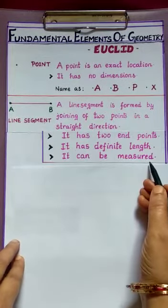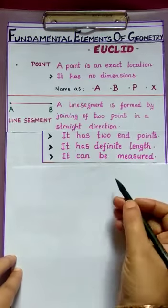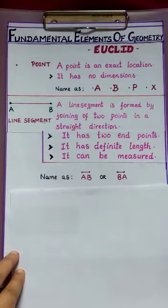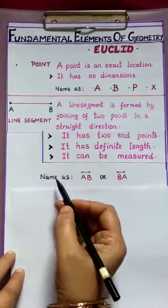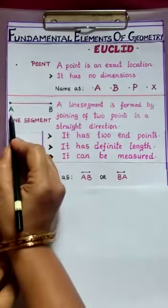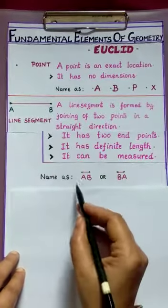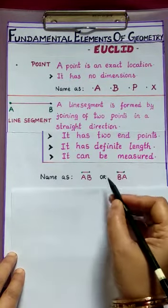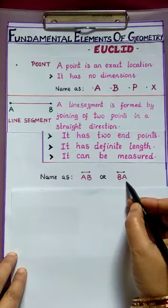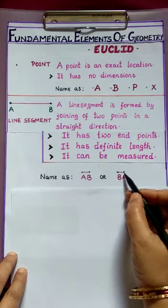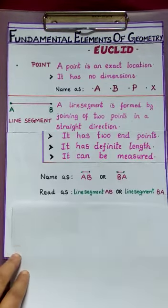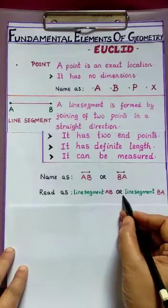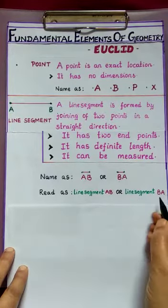So how can we measure the line segment? Yes, by using scale. Now, how can we name the line segment here? Here, if you observe the line segment, the end points are named as point A and point B. So it can be named as AB with a tiny line segment over it. Or it can also be written as BA with a tiny line segment over it. How can we read this? We can read this as line segment AB or line segment BA.